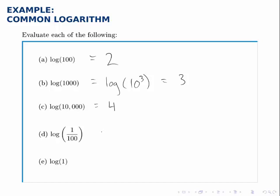For part D, this one's a little more tricky, but we notice that 1 over 100 is the same as 1 over 10 to the second, or 10 to the negative 2. And so the log of 10 to the negative 2 is negative 2, just like the earlier ones.